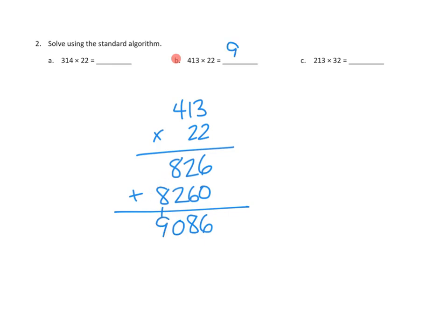And so we've got our answer, which is 9,086. So that's doing it the standard algorithm way. We take each half of our two-digit number here, and we multiply it out, and then we add up our partial products. So we get 826 plus 8,260, add those together, and get our answer.